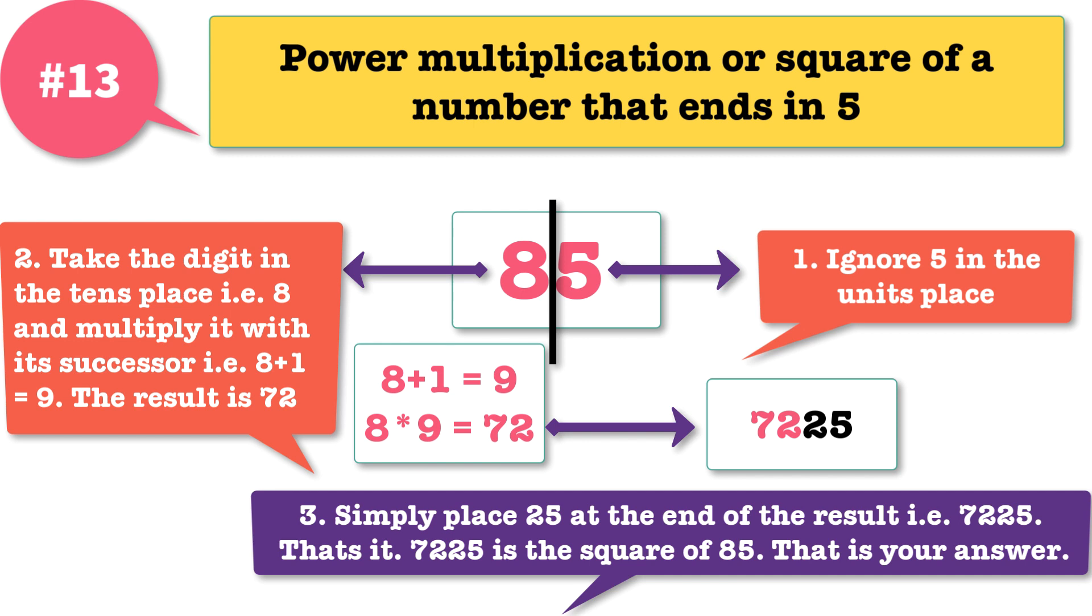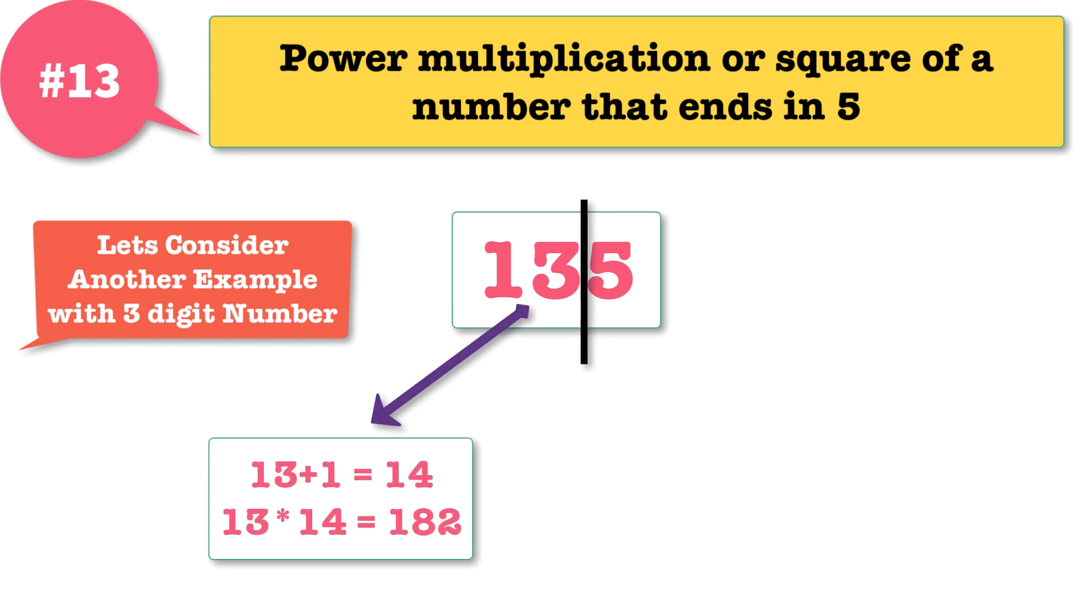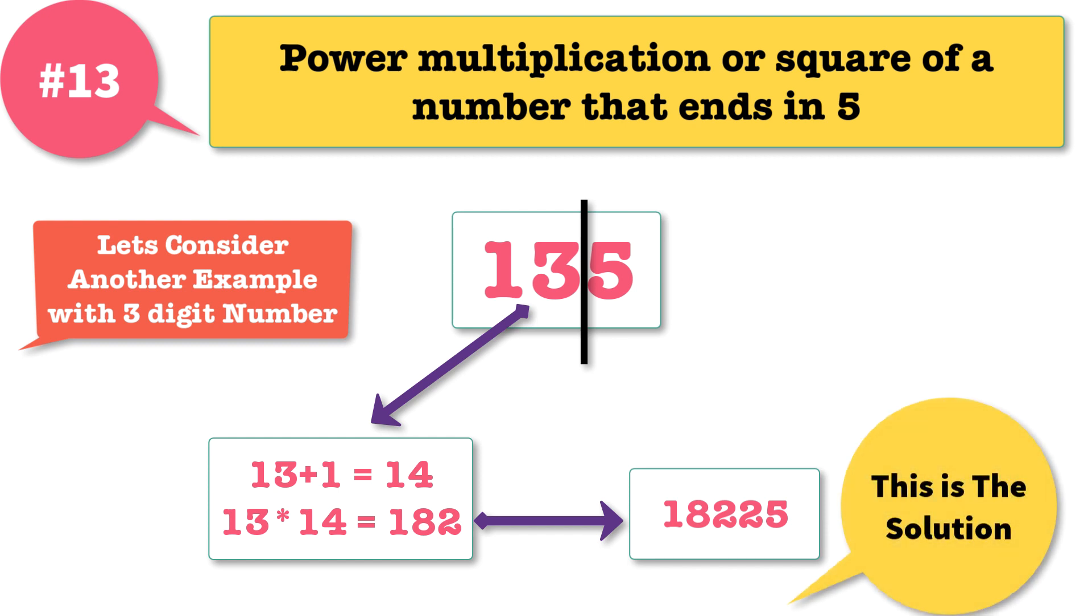This math trick can be used anytime you have to find square of a number ending in 5. It works with 3 digit numbers too. So the square of 135 is: first multiply 13 with its successor, that is 14, which equals 182. Now add 25 at the end. Your answer is 18,225. That's a great math trick.